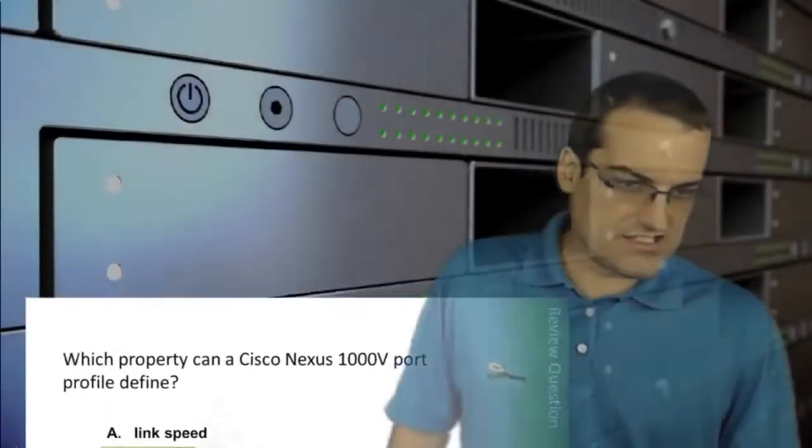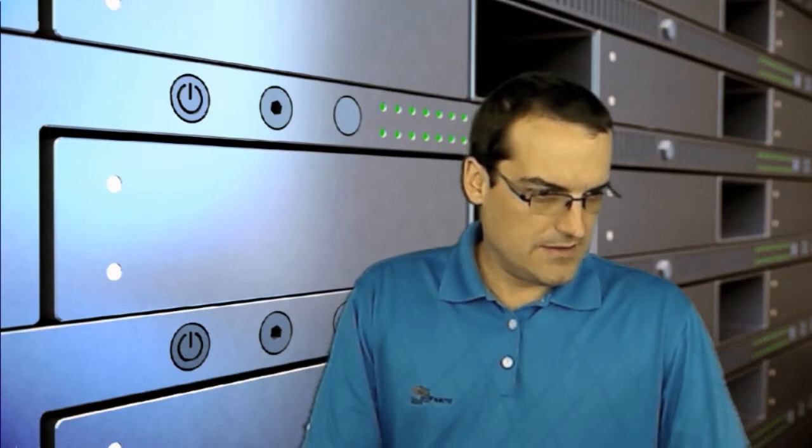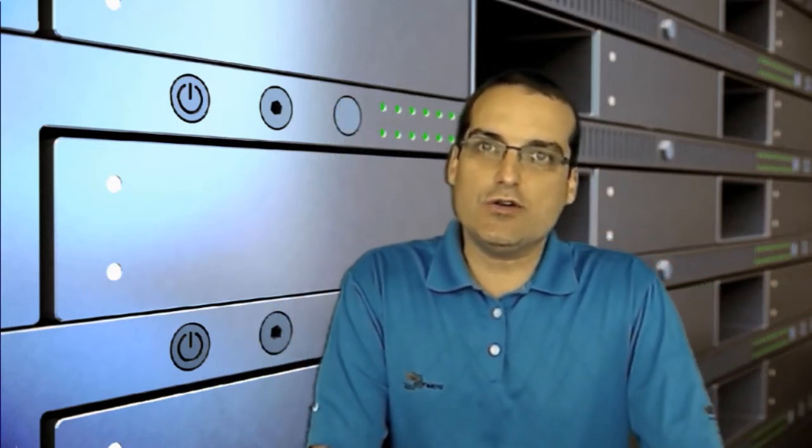Great job on the review questions. The goal for today's session is to complete chapter four. In chapter four, we're going to look at B-series hardware — we're changing from a discussion of C-series rack-mounted servers and beginning to focus on Cisco blade servers that can be inserted in a chassis.